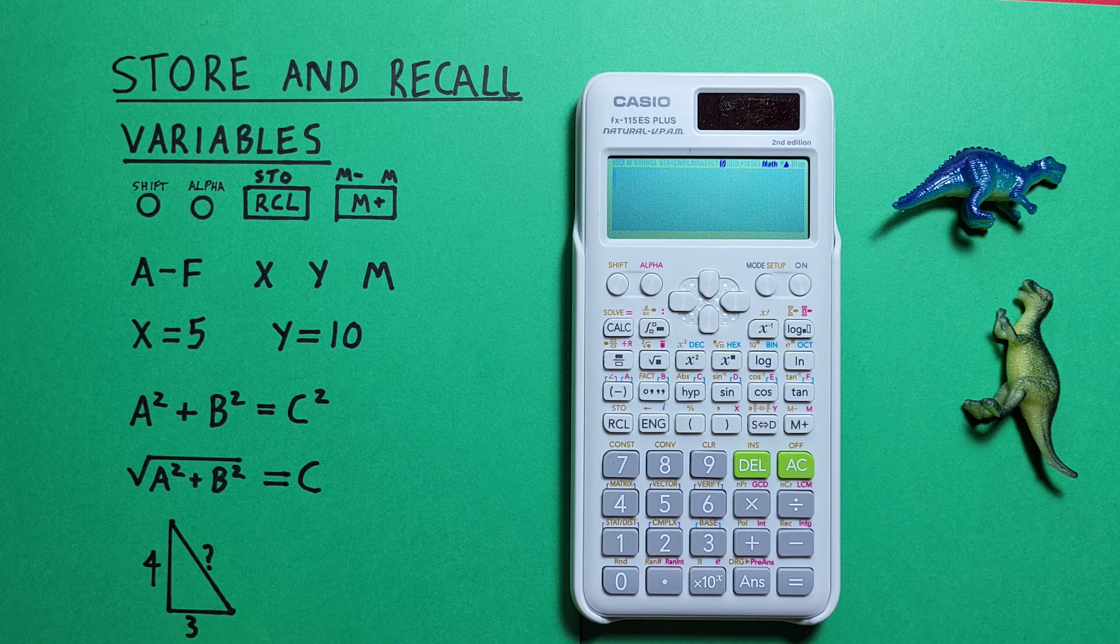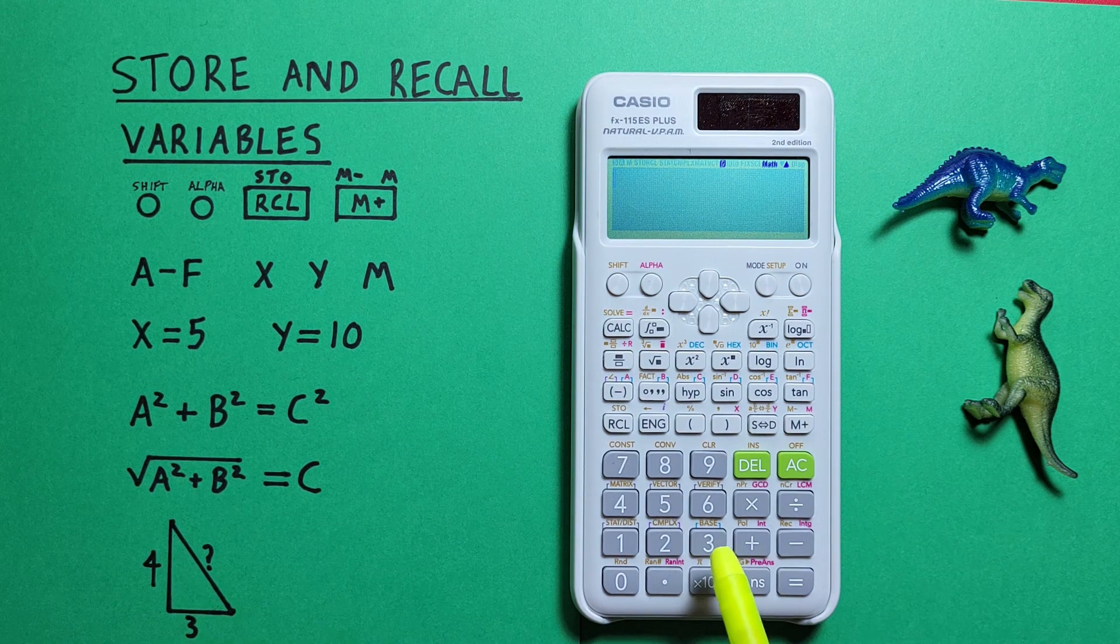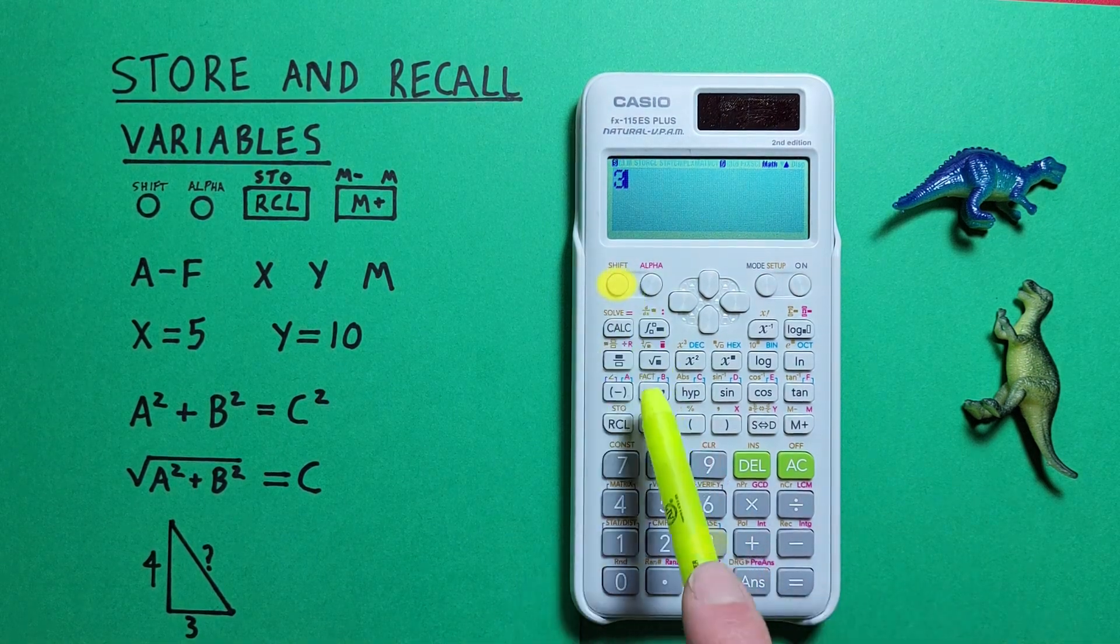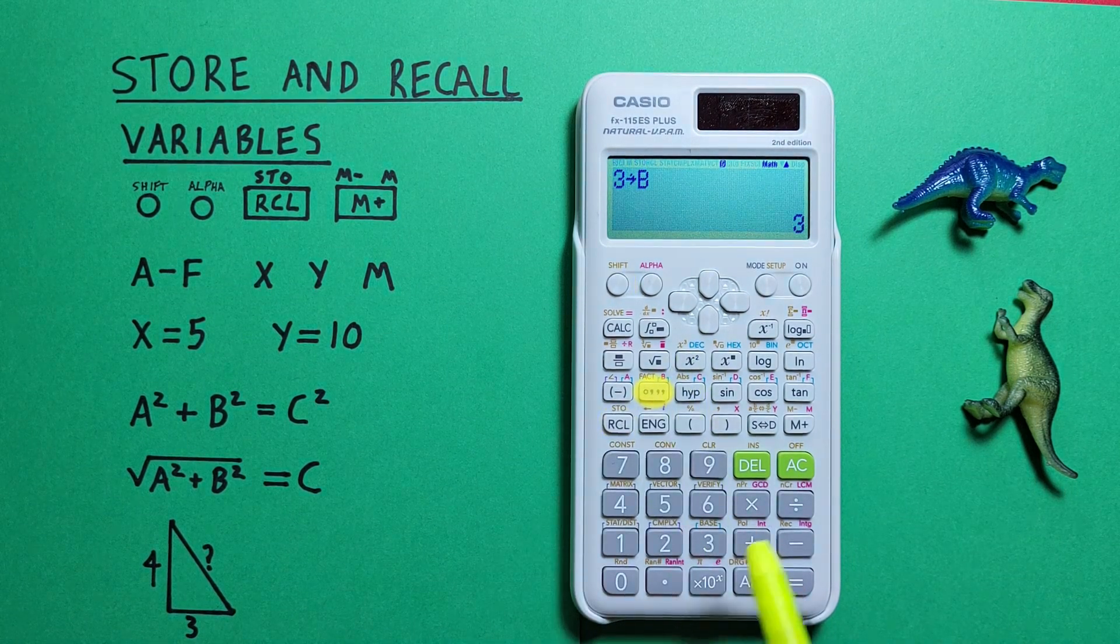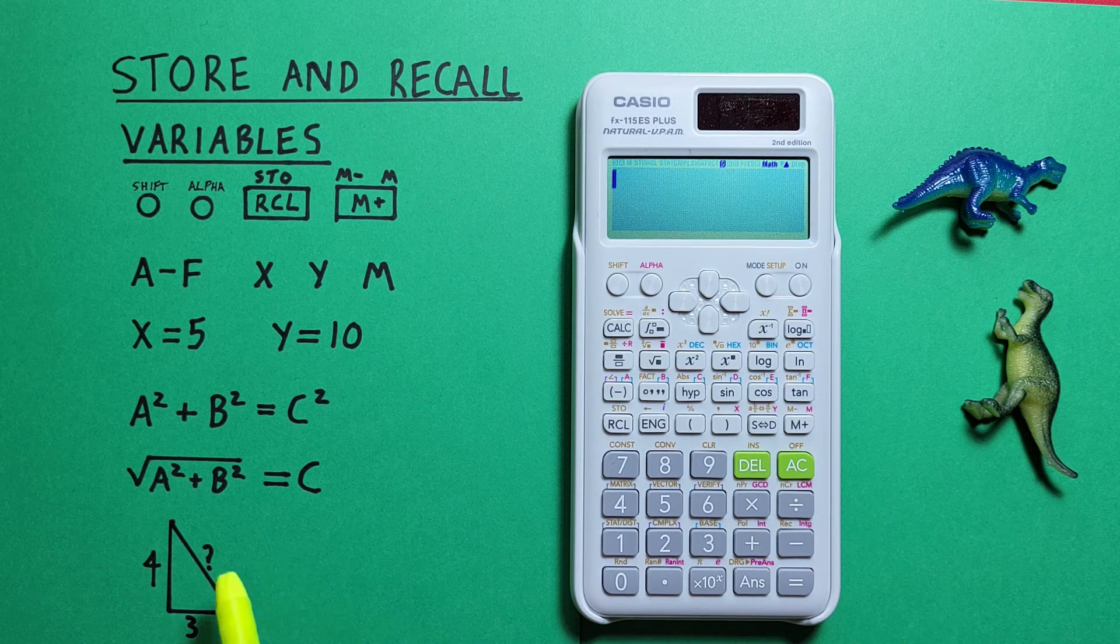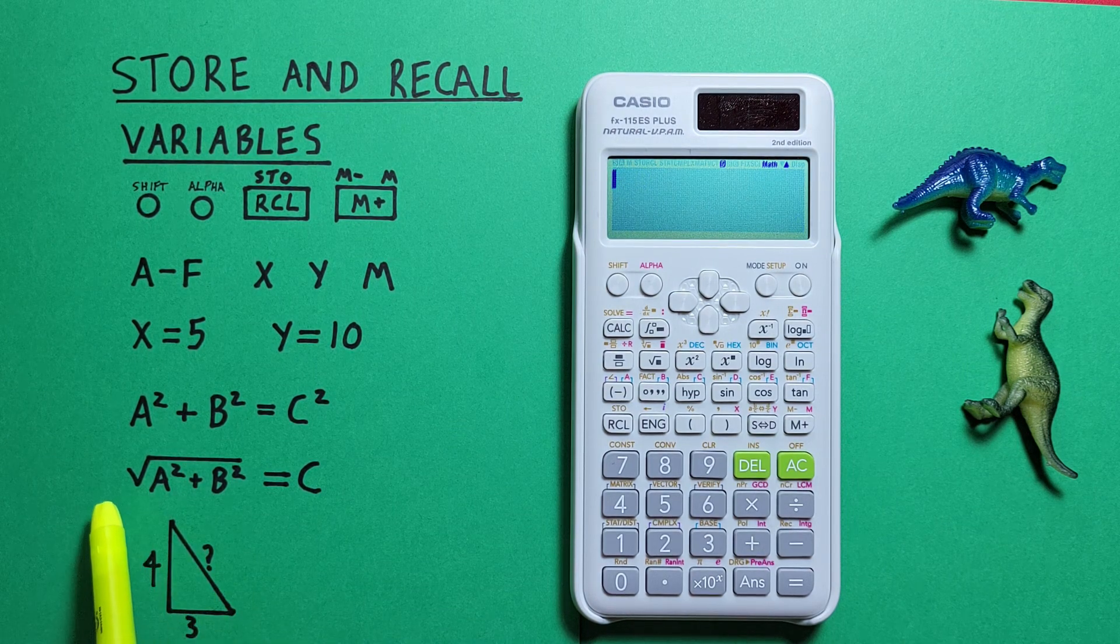And our 3 as b. So 3, shift, store, b. Okay, we've got our variables stored. Now we can enter it into this formula here.